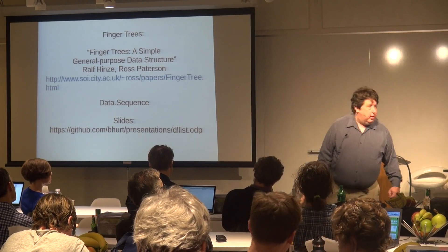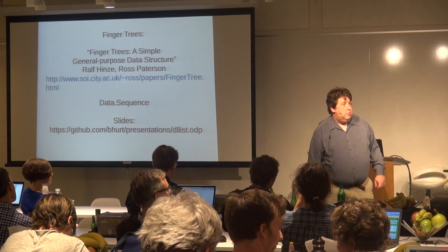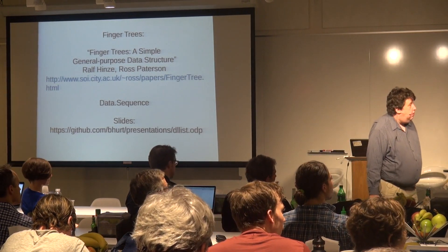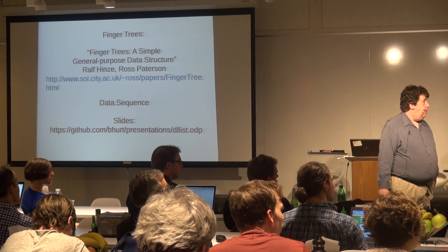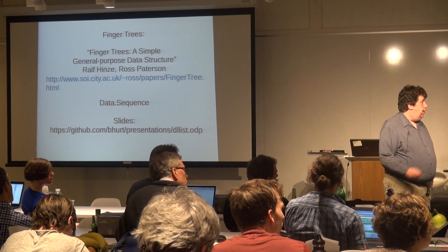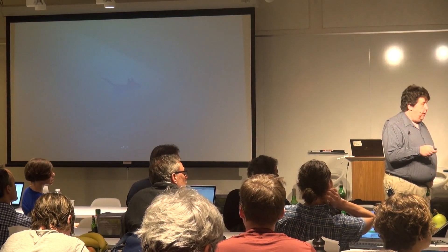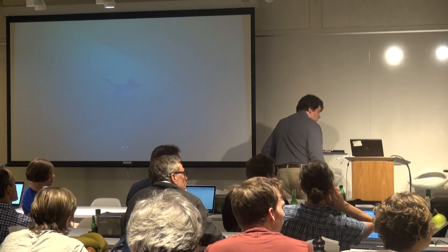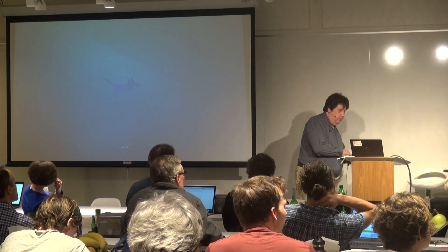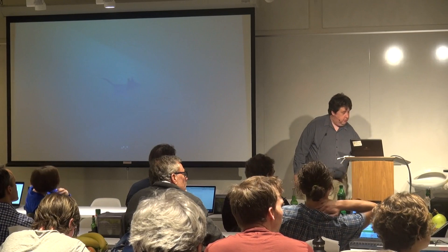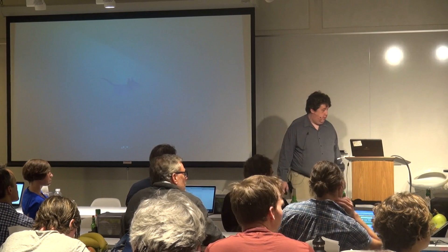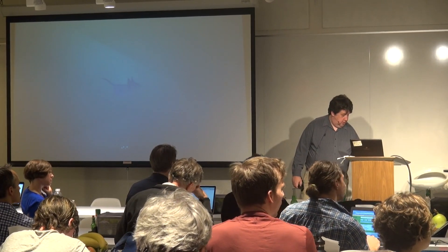Additional terminology from the audience: the two-list structure is named a banker's queue in the literature — they use the banker's method to prove its asymptotics. The insert-point trick is what people refer to as a zipper in the literature, so if you want to read about generalizations of that, look for zipper structures.